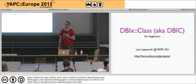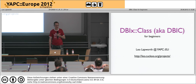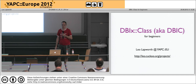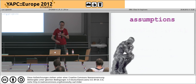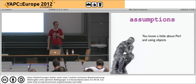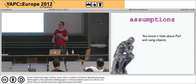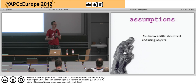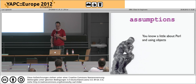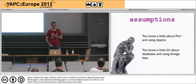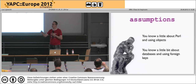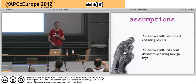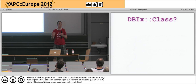Good afternoon everyone, my name is Leo Lapworth and I'd like to talk to you about DBIx::Class, or DBIC as it's often referred to. I'm going to start off with a few basic assumptions - I'm going to assume that you know a little bit about Perl and Perl objects, and that you know a little bit about databases and creating a table with relationships between two tables. If not, don't worry, hopefully this will still be of use to you.